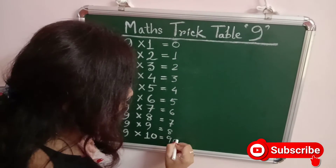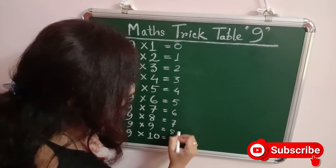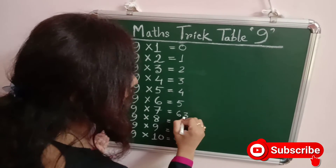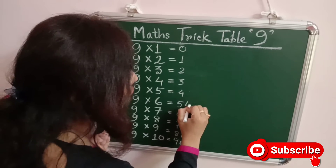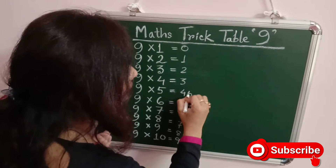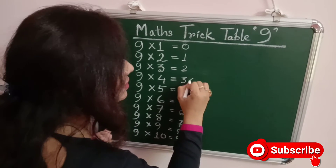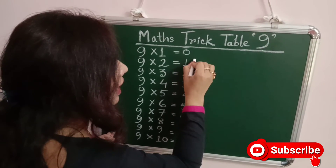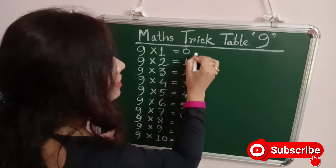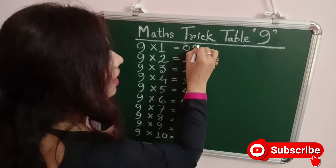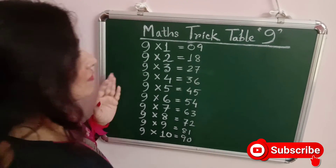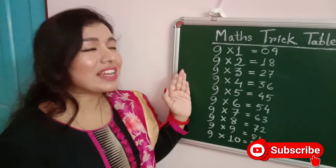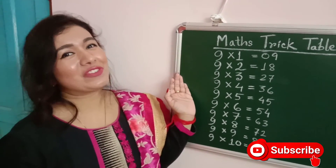Write 0, 1, 2, 3, 4, 5, 6, 7, 8, 9 going downward alongside 9 down to 0. This is the total math trick table of 9.